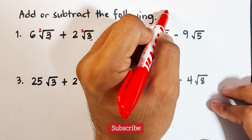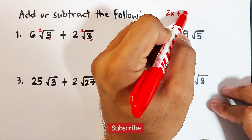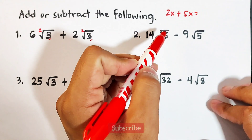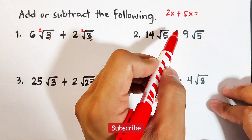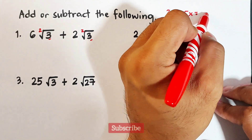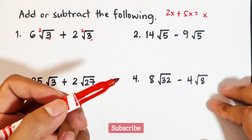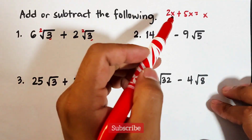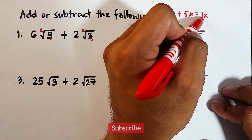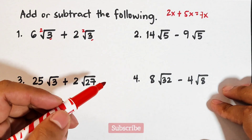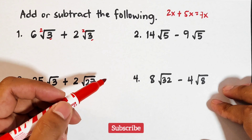We can apply our knowledge about adding polynomials. For example, 2x plus 5x — since the variables are the same, we just copy x and add the coefficients: 2 plus 5 equals 7, so the answer is 7x.